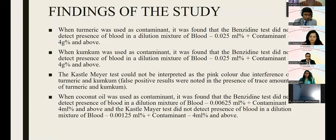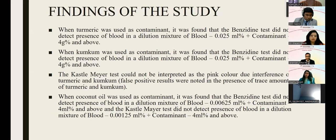Phase three — validation: since all 30 replicated results were negative for blood, control samples of diluted blood without contaminant addition were also tested alongside to confirm the diluted blood's positivity to presumptive tests, and all produced positive results. It was determined that contaminant addition was certainly reducing the efficiency of benzidine and Kastle-Meyer tests. Findings: for turmeric and kumkum, benzidine did not detect blood from the second dilution onwards. For coconut oil, benzidine did not detect blood from the fourth dilution onwards, and Kastle-Meyer did not detect from the third dilution onwards. The Kastle-Meyer test could not be interpreted for turmeric and kumkum due to color interference.